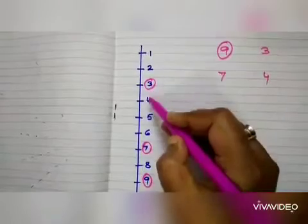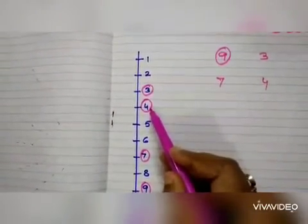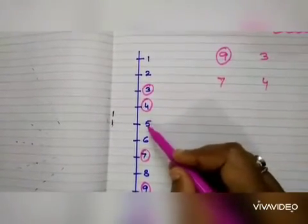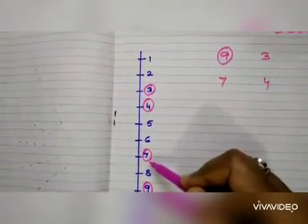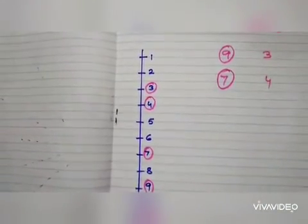1, 2, 3, 4. Yes. 4 is coming first. That means it is smaller number. After 4, 5, 6, 7. 7 is coming after that. So 7 is the bigger number.